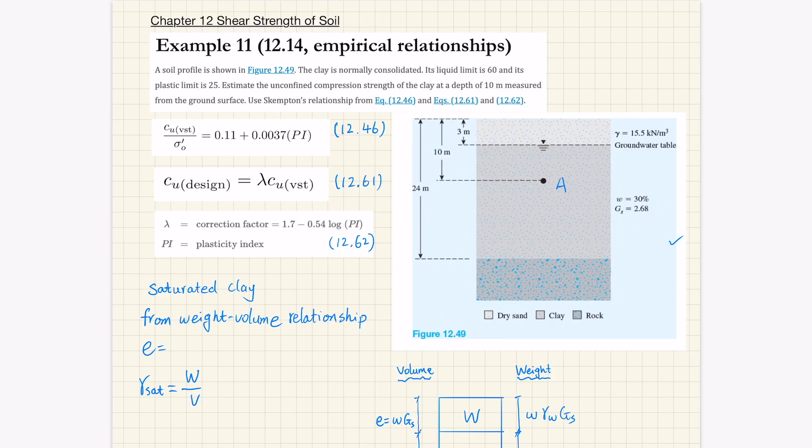You have a dry sand layer with a unit weight of 15.5 kN per meter cubed, and you also have this clay layer where you know the moisture content and the specific gravity GS. You're asked to estimate the unconfined compression strength of the clay at this particular location. We're going to call this location A, at a depth of 10 meters.